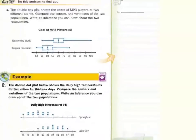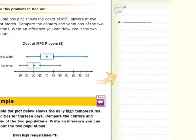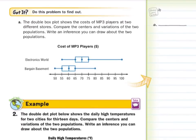Now we get to try this on our own. The double dot plot shows the cost of MP3 players at two different stores. Compare the centers and variations of the two populations and write an inference. One of the first things we need to ask: is this plot symmetric? This side is shorter than that side, so it's not symmetric for Electronics World. For Bargain Basement, this also looks unbalanced, so that's not symmetric either.